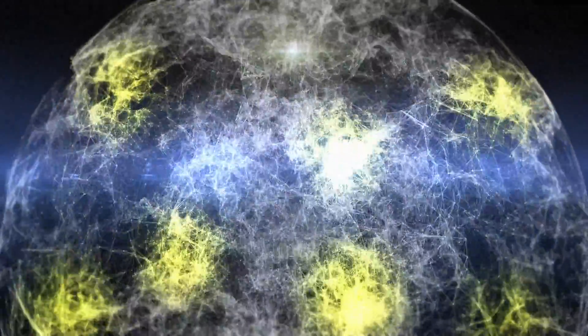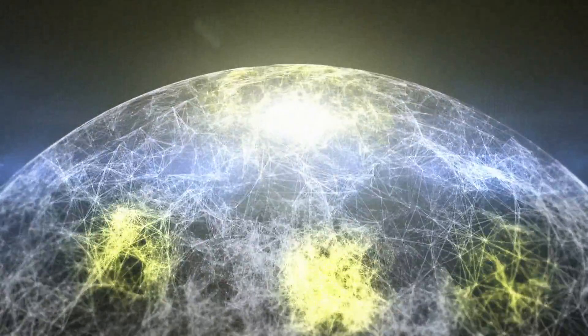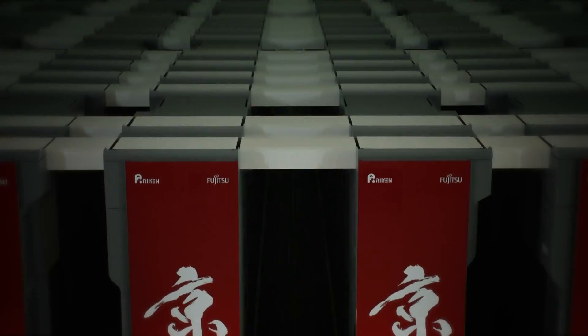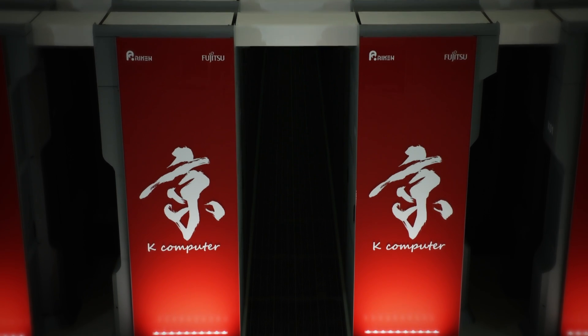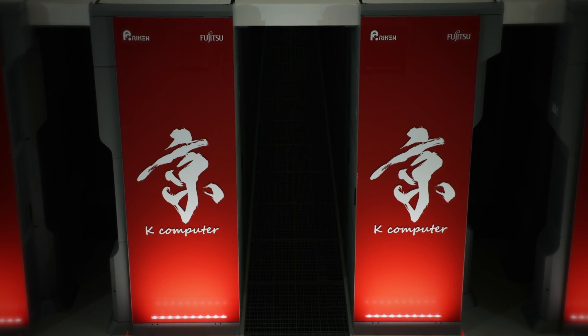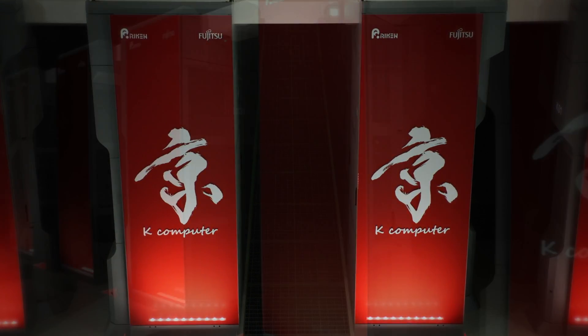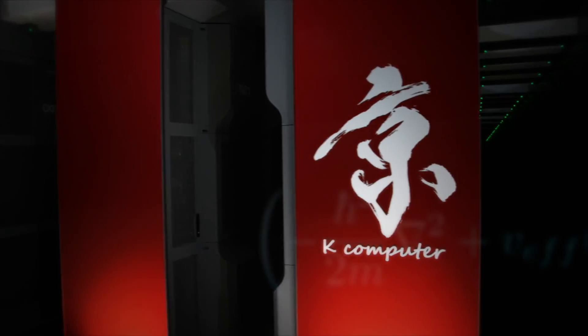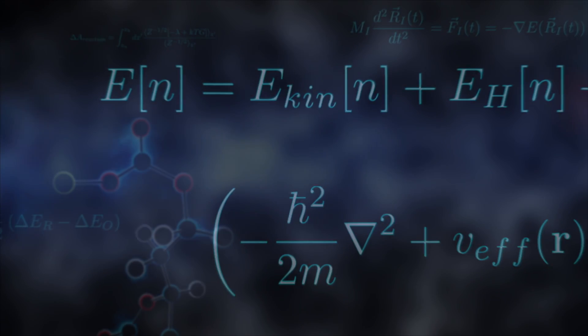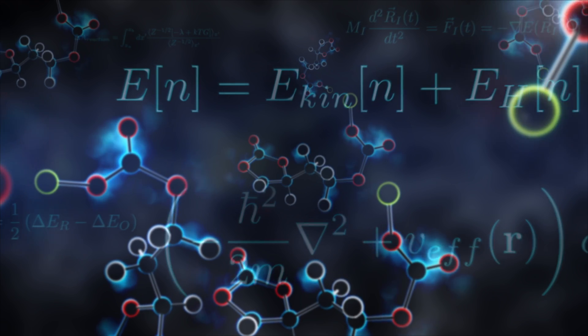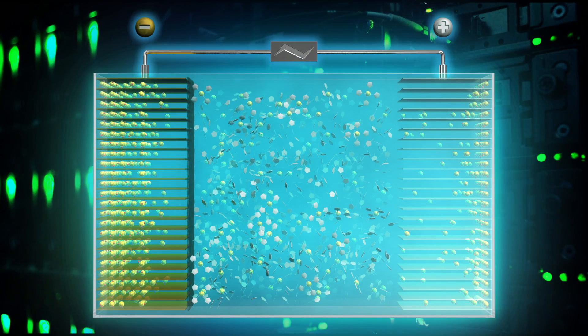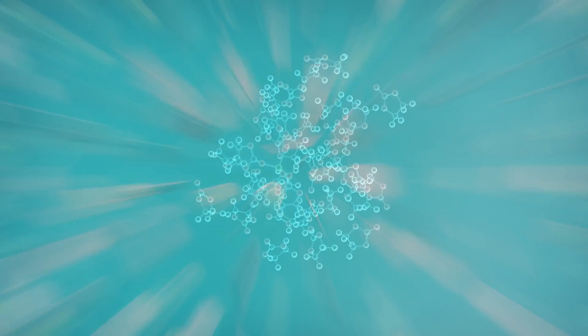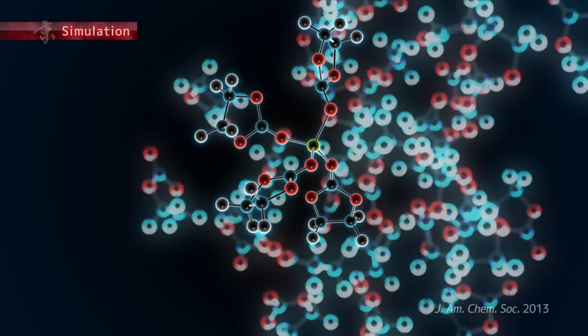And now, a new approach is emerging for developing the ultimate battery. This new approach is the computer-aided search for materials using the K computer. Simulating the motions of individual molecules will help us better understand the mechanism of batteries. Let's take a look at the molecular structure inside a battery computed on the K computer.